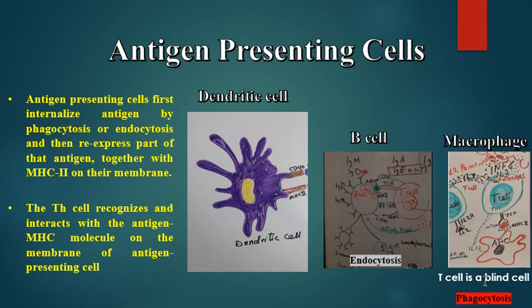Now the T-cell can recognize the antigen. As you know, the T-cell is a blind cell — it cannot see tertiary protein, but it can see a primary protein in peptide form. So now the T-cell can interact with antigen presenting cells displaying antigen in peptide form.